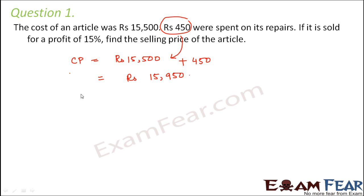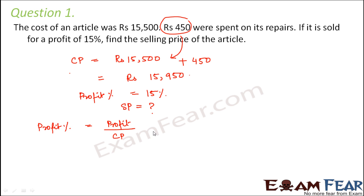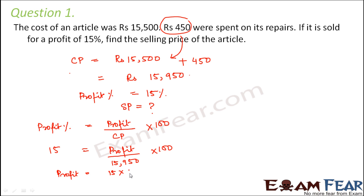It is sold for a profit of 15%, so the profit percentage is 15% and we have to find the selling price. We know that profit percent equals profit divided by cost price, into 100. So 15 equals profit divided by 15,950 into 100. Therefore profit equals 15 × 15,950 ÷ 100, which gives Rs 2,392.50. This is the actual profit in price.